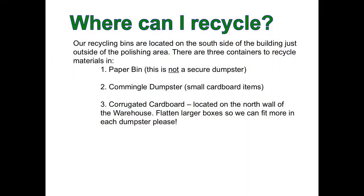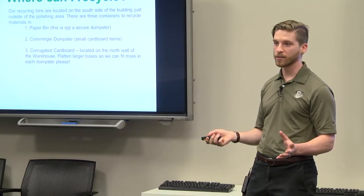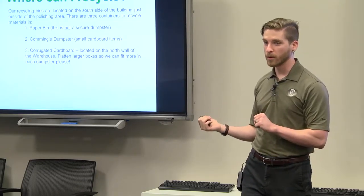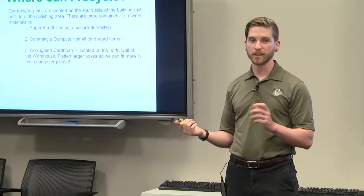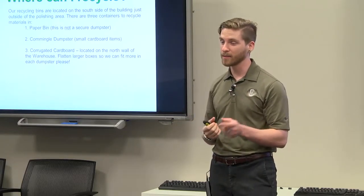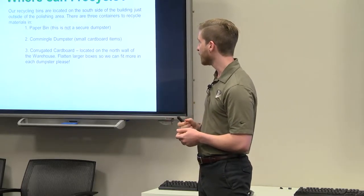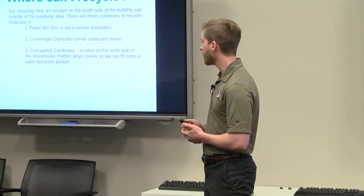The paper bins are not secure. So if you have your financial records or maybe you've printed off some incriminating phone records, something like that, you'll want to be sure and shred those. Otherwise, someone's going to see your bank statement. Commingle Dumpster can accept some small cardboard stuff. We'll talk about that in a couple slides.